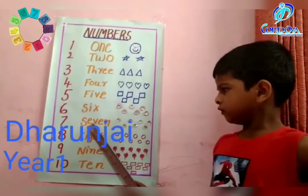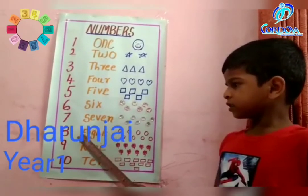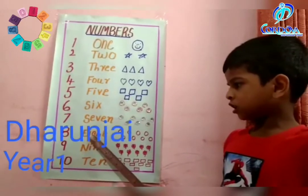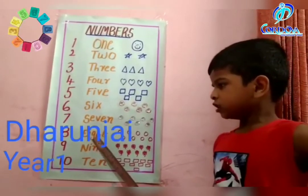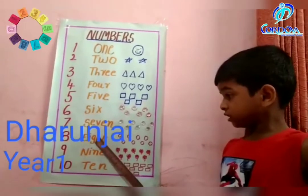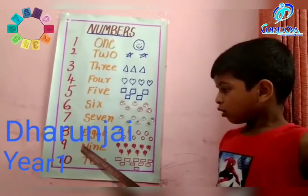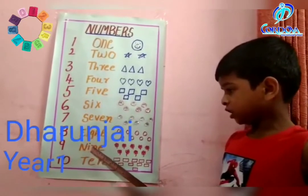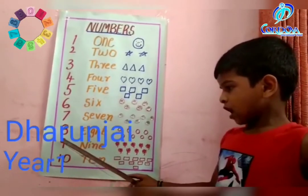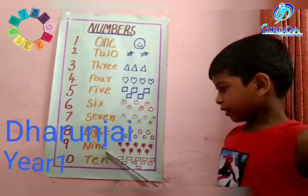6, 7. Eight, eight, eight. Nine, nine, nine. Ten.